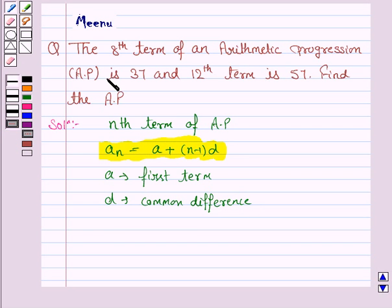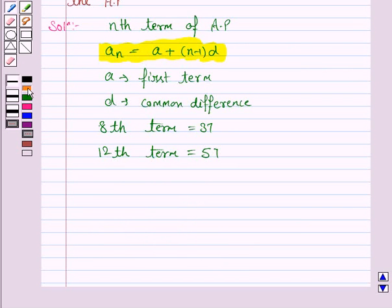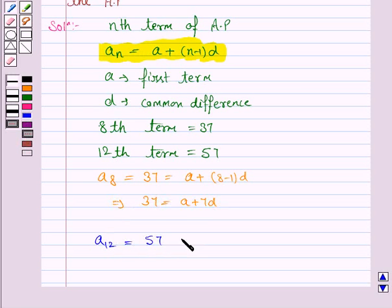Now we are given the 8th term and the 12th term. A8 is 37, which equals A plus 8 minus 1 into D. That is, 37 equals A plus 7D. Similarly, A12, which is 57, equals A plus 12 minus 1 into D. So this implies 57 equals A plus 11D.